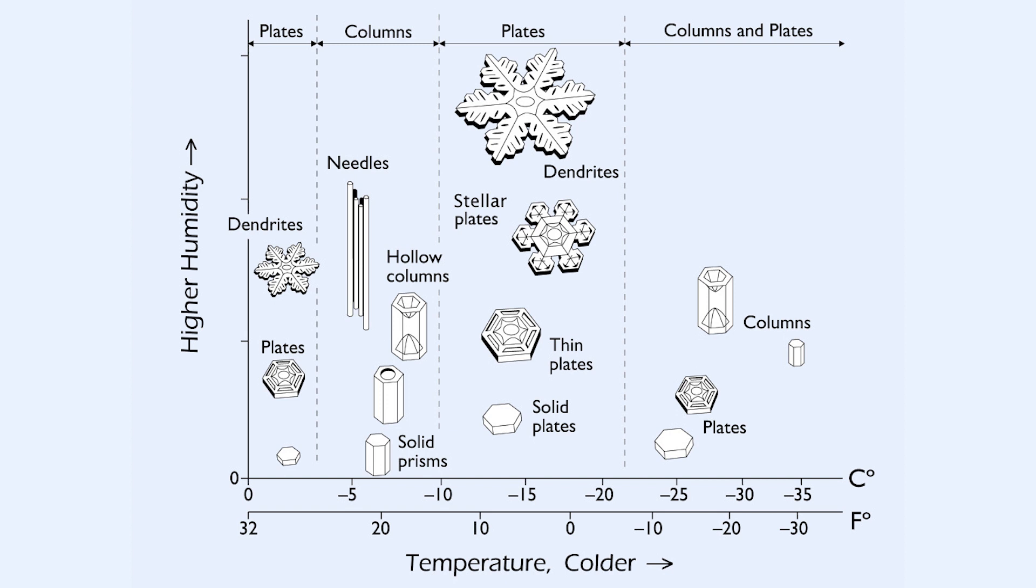This is summarized in the snow crystal morphology diagram. It shows that the largest, most photogenic stellar snow crystals only grow in a narrow temperature range around minus 15 degrees Celsius. Needles and columns are best found around minus 6 degrees Celsius. Capped columns appear when the temperature changes as the crystals grow. Remember, these are temperatures in the clouds. It is often substantially warmer on the ground.